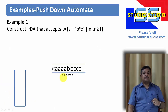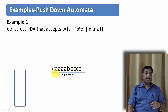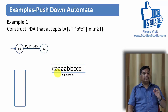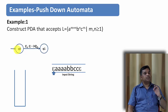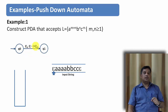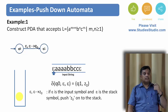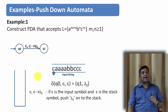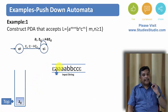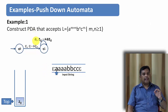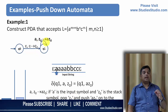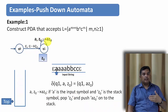Let us try to design the PDA. Take the string a a a b b c c. Before the string starts we have epsilon and after the string ends we have epsilon. On the first epsilon, we go from starting state q0 to q1 with transition: epsilon, epsilon → z0, meaning we push z0 onto the stack. The next symbol is a: input is a, z0 is on top of the stack, so the transition a, z0 → a z0 pushes a onto the stack above z0.